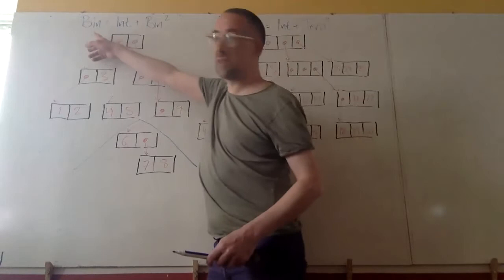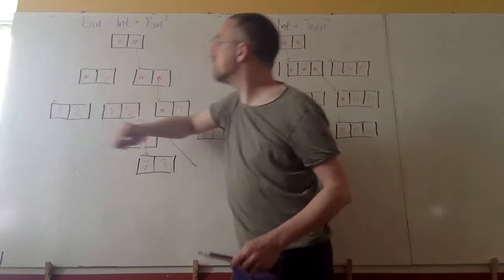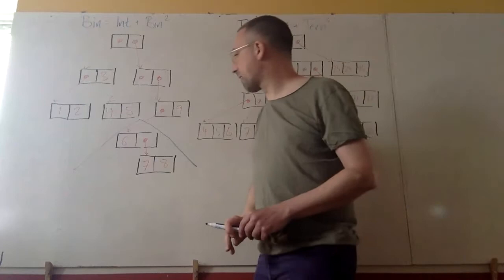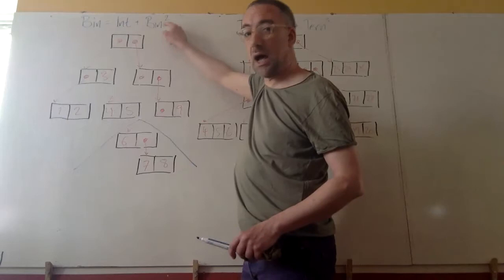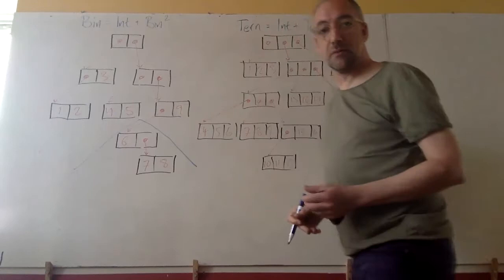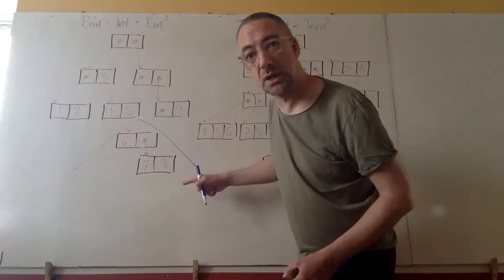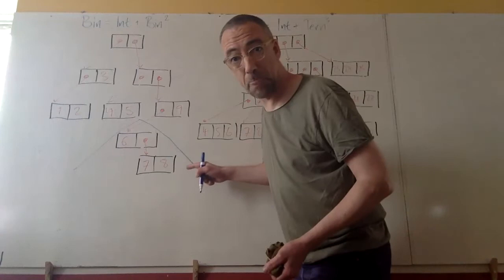You can think of the type of binary trees as solving the equation: bin = int + bin². A tree is either a number like one, or it's a pair of substructures. I'm using plus to mean choice, multiplication to mean pairing, and squared as shorthand for bin cross bin. The substructure in focus is characterised just by the same type bin. But what is the type of the context?